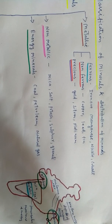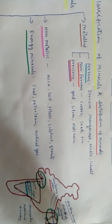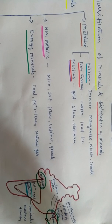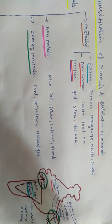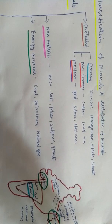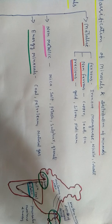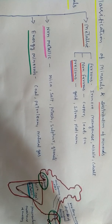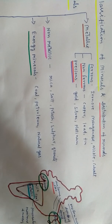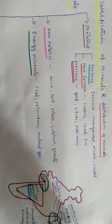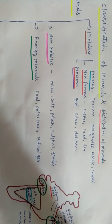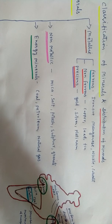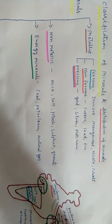Non-ferrous minerals are minerals where iron is not found, such as copper, lead, tin, and many others. Precious minerals are those which are more expensive, such as gold, silver, and platinum. The second category of minerals is non-metallic minerals, such as mica, salt, potash, sulfur, and granite.